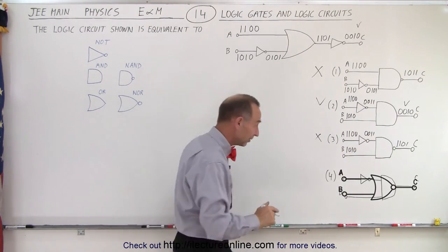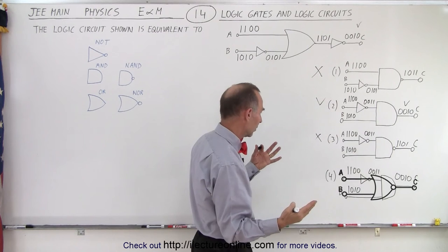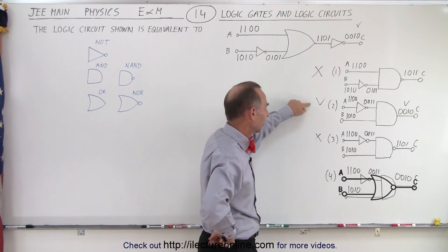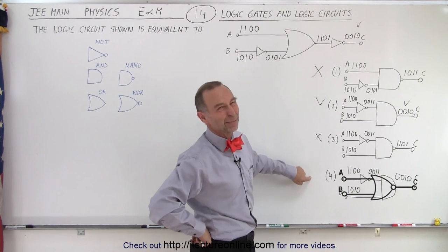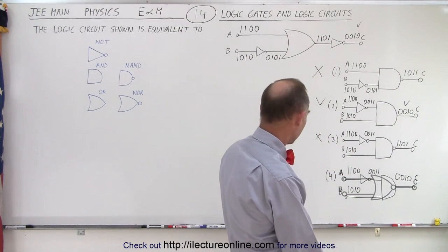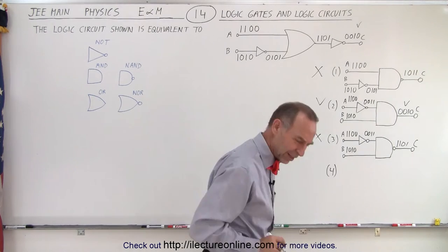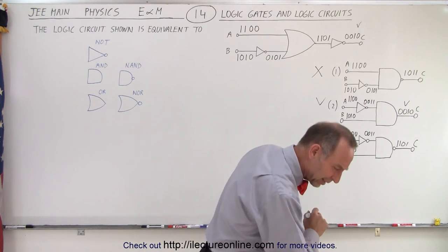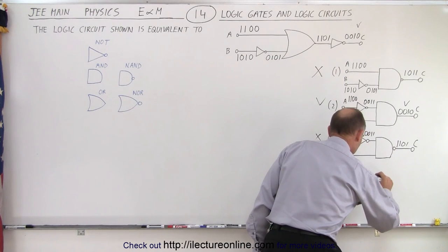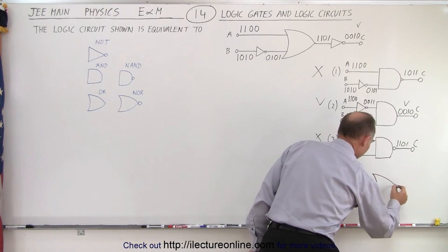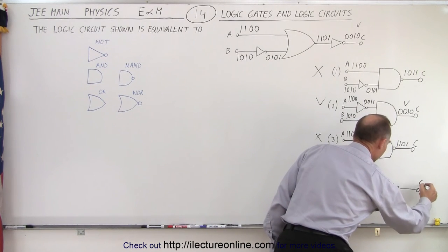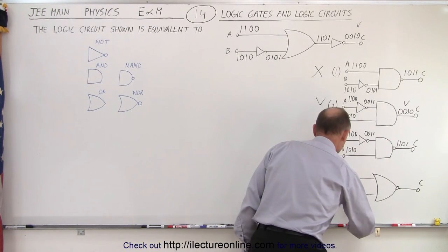Wait — I drew circuits 3 and 4 the same by mistake. What I should have drawn for circuit 4 is a NOR gate — two inputs going into a NOR gate. Let me correct that now.